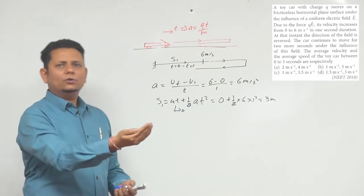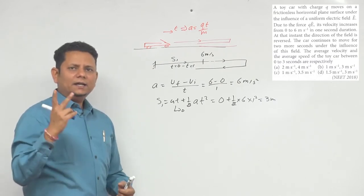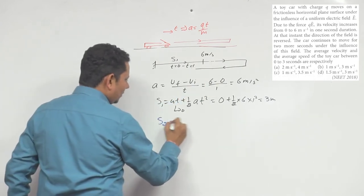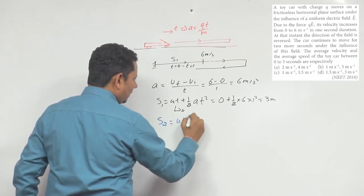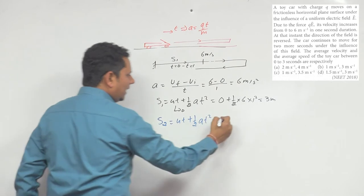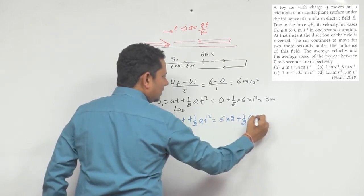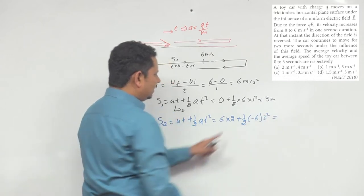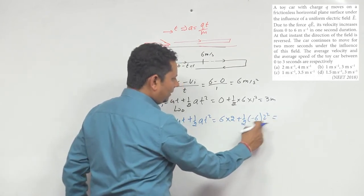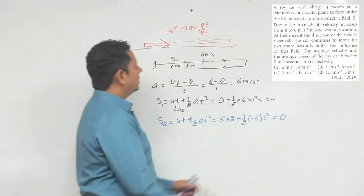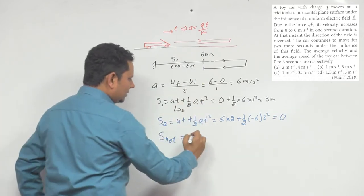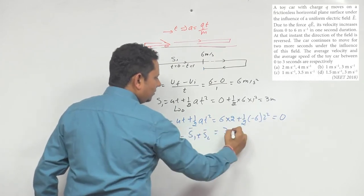Now the acceleration is in reverse direction. We need to find the displacement in the next 2 seconds with retardation motion. So S2 equals ut plus half a t squared. U is 6 meters per second, so this is 6 multiplied by 2 plus half multiplied by minus 6 into 2 squared. This gives us 12 minus 12 equals 0. So S2 is 0. Net displacement is S1 plus S2, which is 3 plus 0 equals 3 meters.